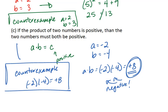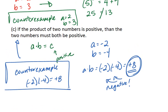This example shows that the original conjecture is false. It is not always the case that if we have a positive number formed from the product of two numbers, that those two numbers must both be positive. They can, in fact, be negative.